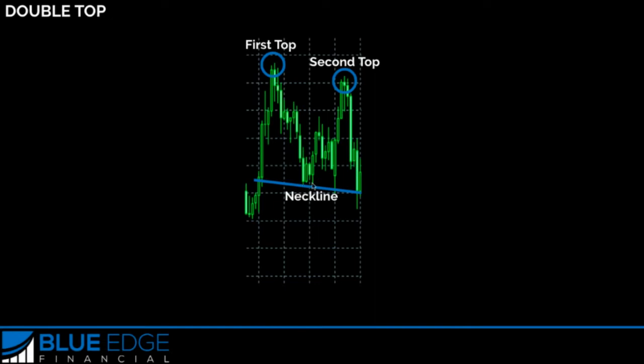It came back down, so the fact that price was moving up but was not able to break through the top two times is a strong indicator that the buyers or bulls are being overtaken by the sellers or bears. It's a good chance the sellers are going to take complete control and a reversal is going to occur.